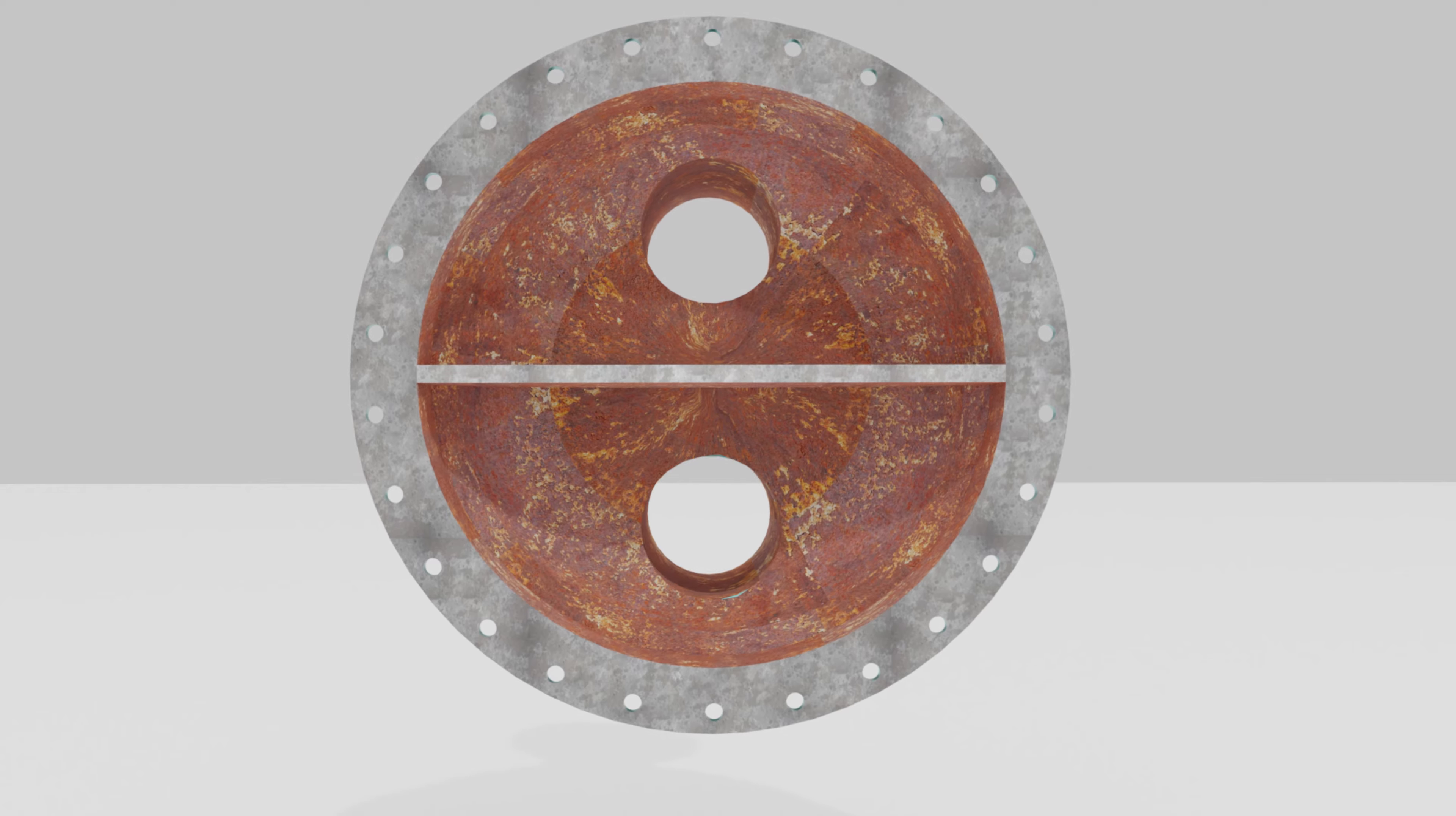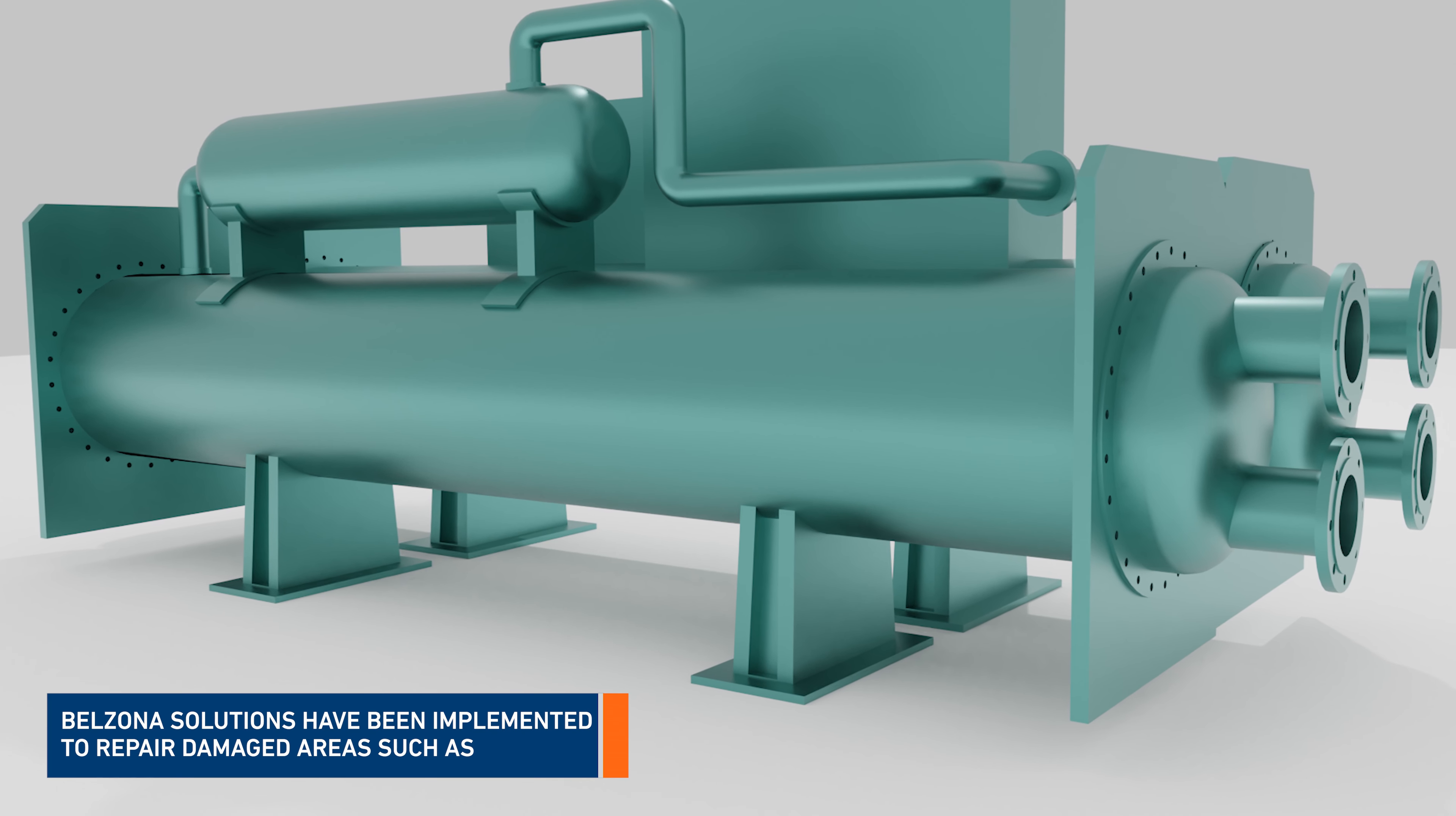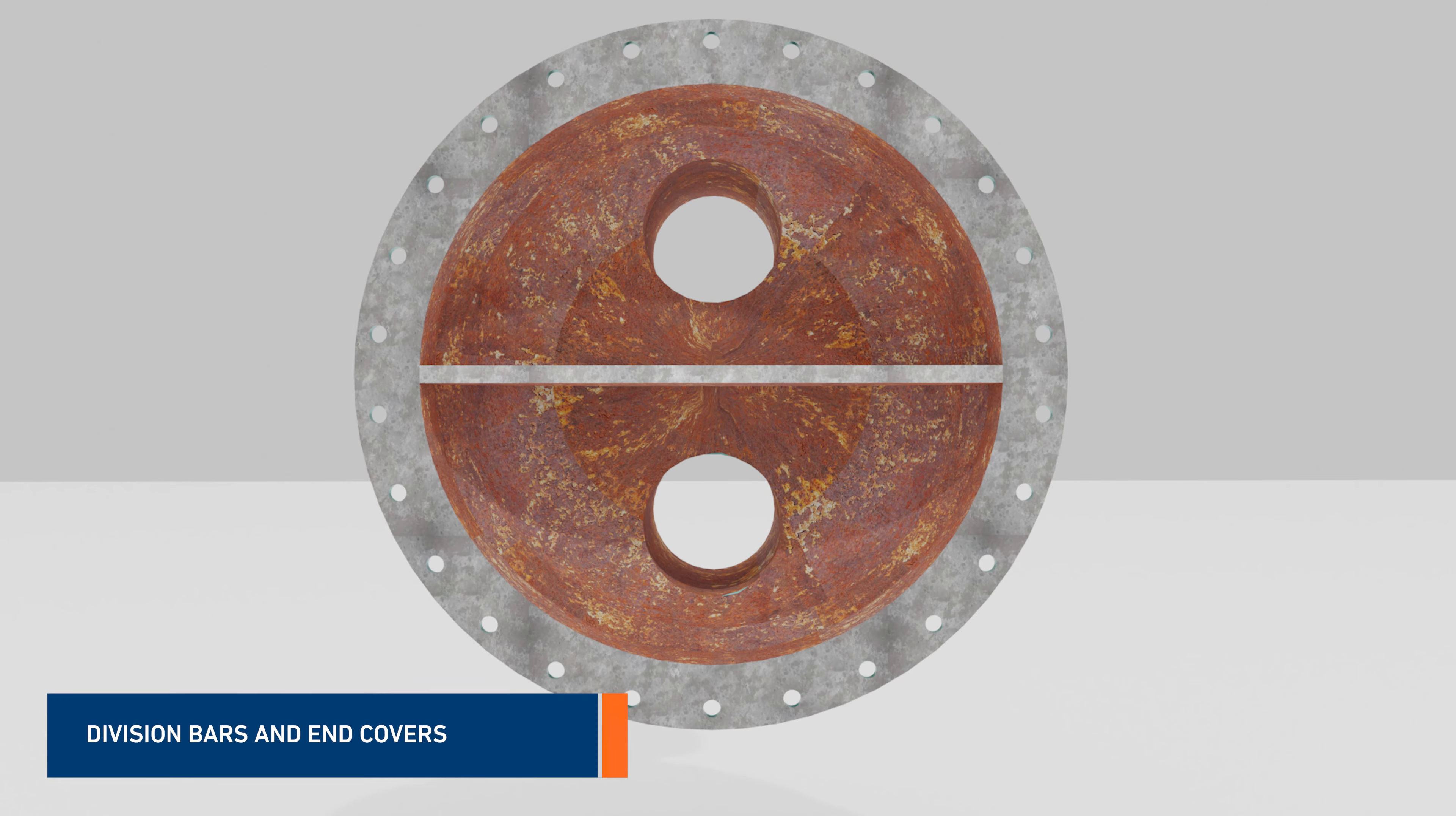Belzona solutions have been implemented for many years and throughout the entire world, aimed at repairing sections of the heat exchanger, including tube sheets, division bars, and end covers.